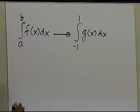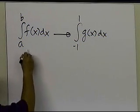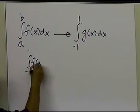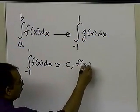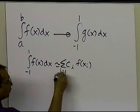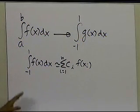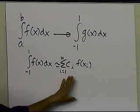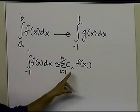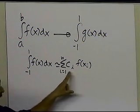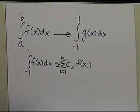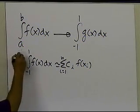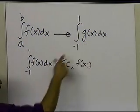Why do we need to do that? It's because in the handbooks the values of the arguments and the weights for the Gaussian quadrature rule are given for an integral going from minus 1 to plus 1. So if you look at any handbook, you'll find that under the Gaussian quadrature rule they will give you the arguments, which are x of i, the weights, which are c of i, only for the integral which is going from minus 1 to plus 1. So we have to have some mechanism of knowing how we can convert this integral into that integral.